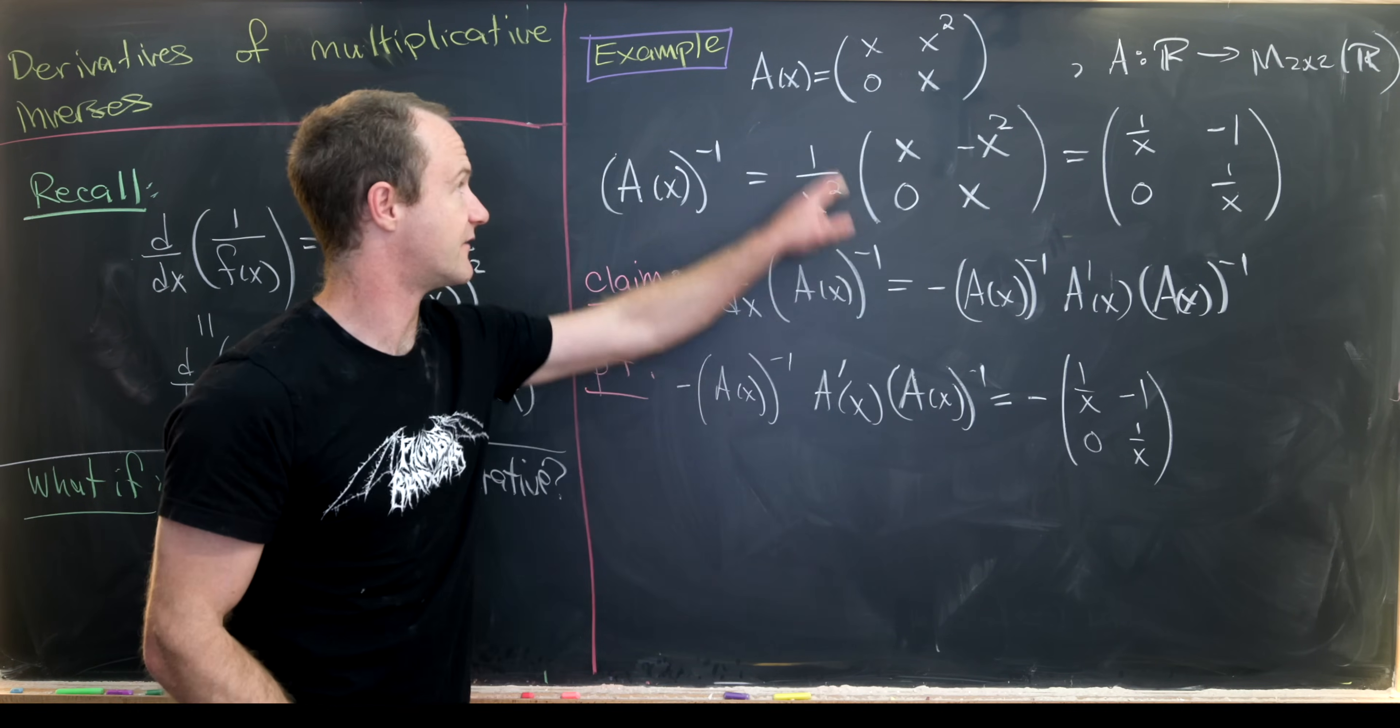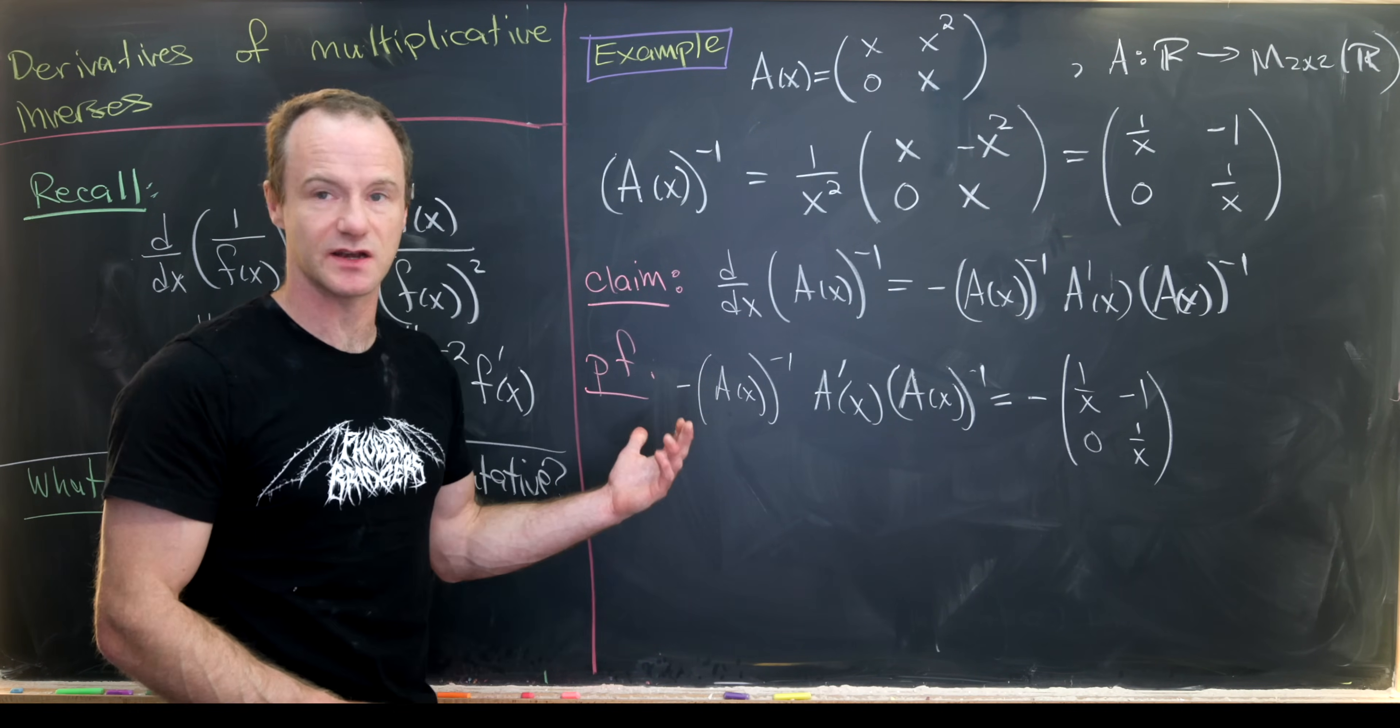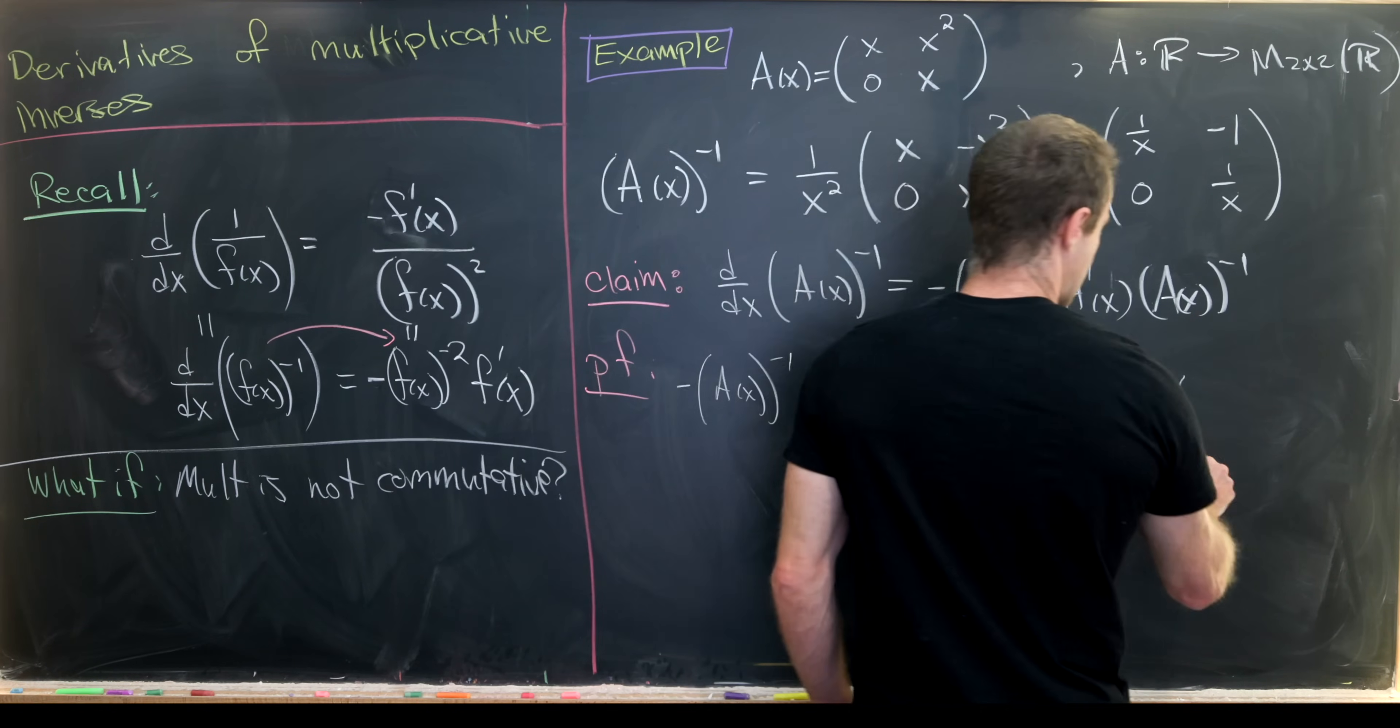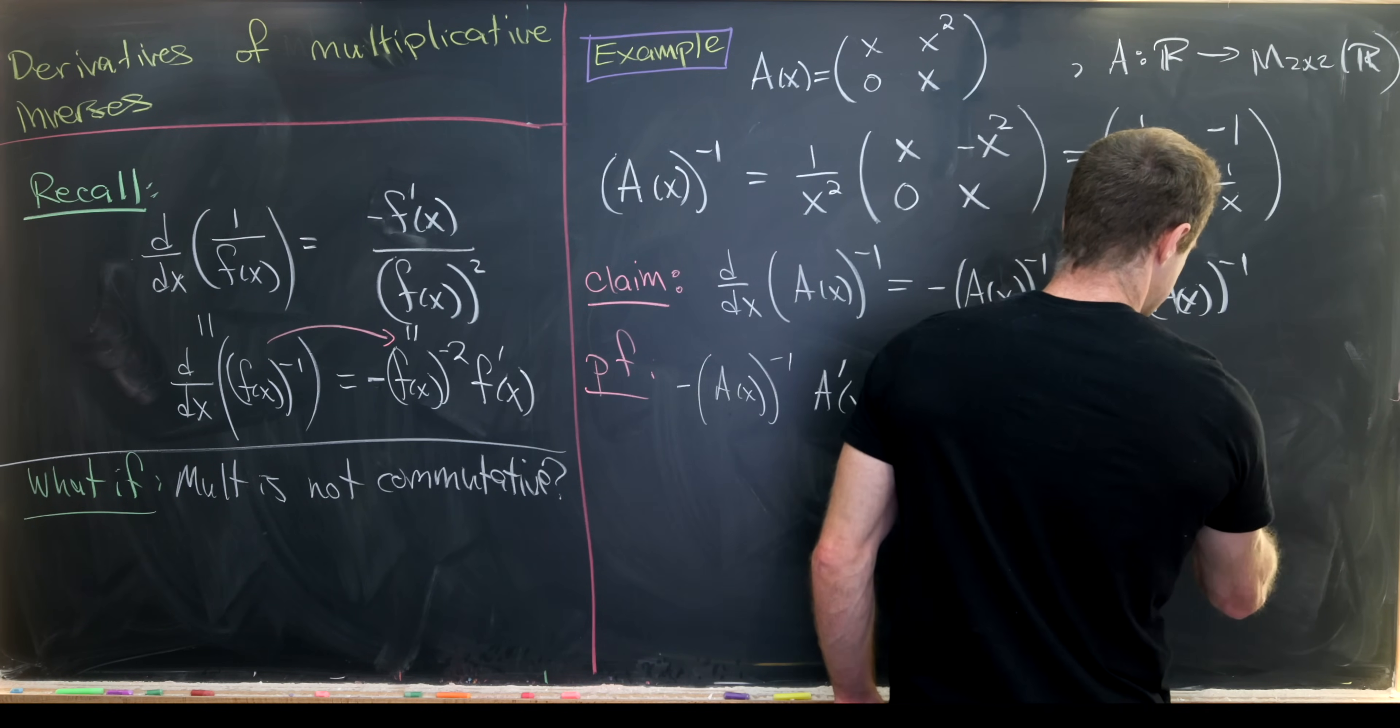Then the derivative of our original matrix, just done component-wise, will give us 1, 2x, 0, 1.